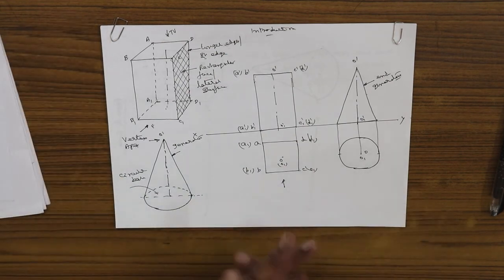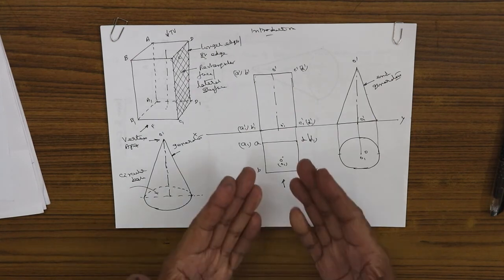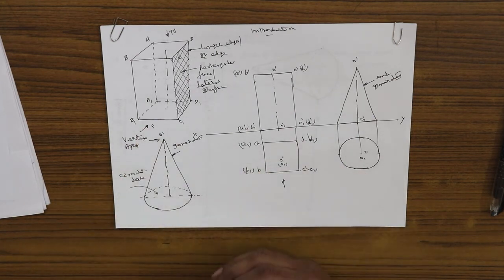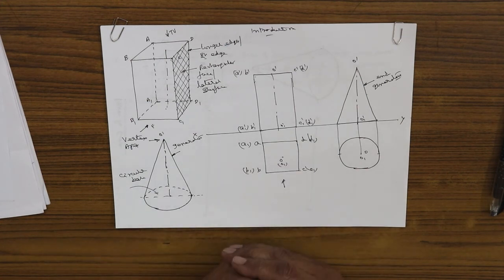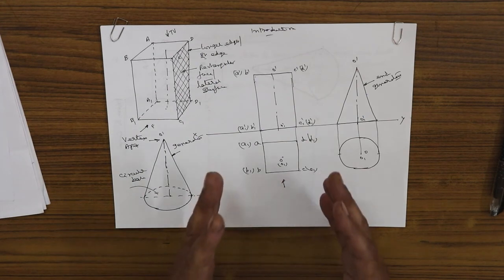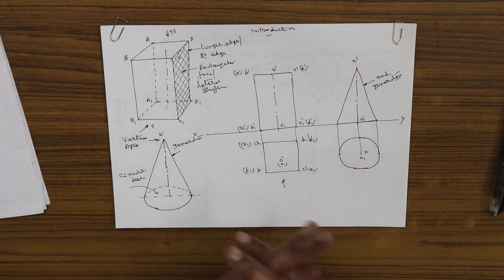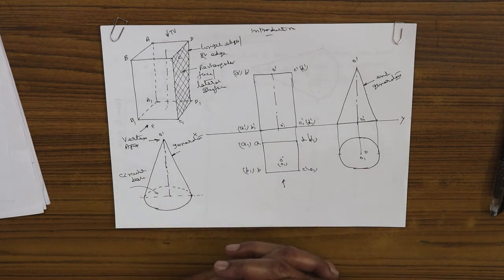We will solve problems on various types of prisms and cones when they are lying in the first quadrant in different positions — a prism may be standing on the side, standing on the corner, inclined to HP, or inclined to VP. We will draw the front view and top view of the prism and the cone. That is what we are going to study in this chapter.